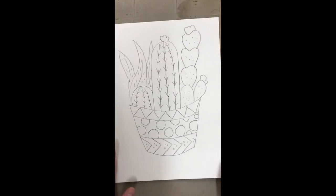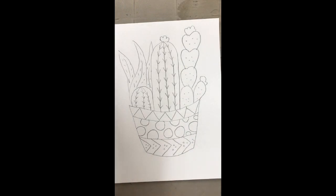Okay, so now I have my cactus drawing. The next step is I'm going to take a sharpie and I'm going to outline all of those pencil marks.